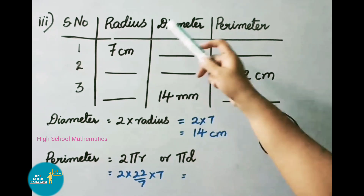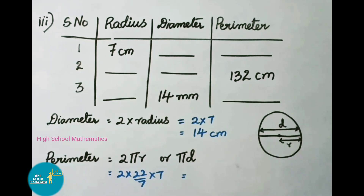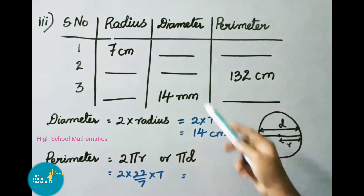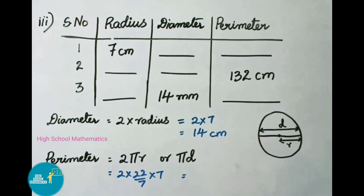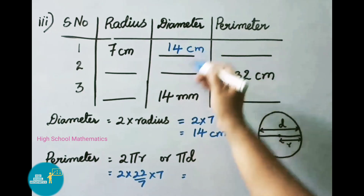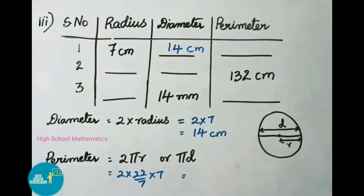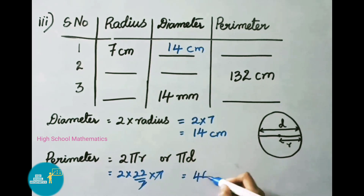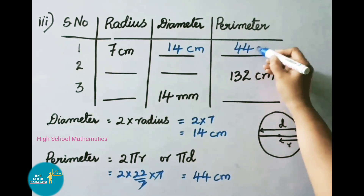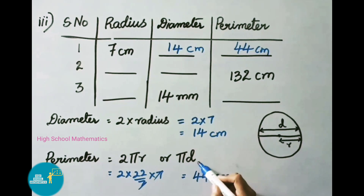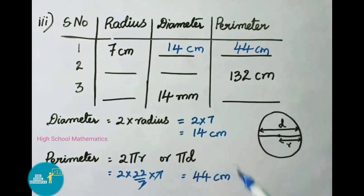For the third question, first row, they have given radius 7 centimeters. We need to find diameter and perimeter of a circle. Diameter = 2 × radius = 2 × 7 = 14 centimeters. Perimeter = 2πr = 2 × (22/7) × 7; here 7 and 7 cancel, giving 2 × 22 = 44 centimeters. We can use either the formula 2πr or πd.